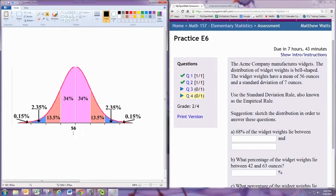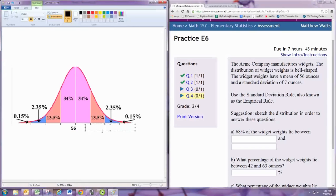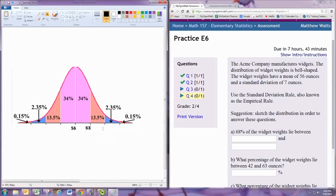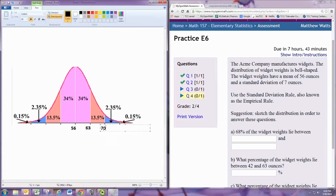adding them to the right and subtracting to the left. So adding one standard deviation: 56 plus 7 gives us 63. Adding another gives us 70, and adding one more gives us 77. Going back the other way...